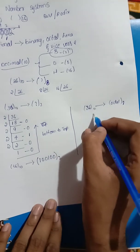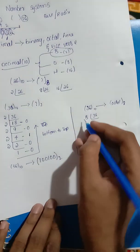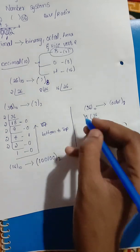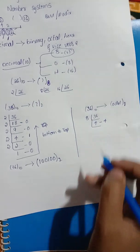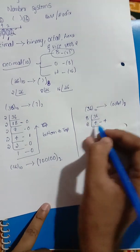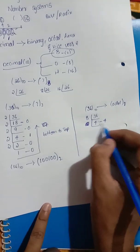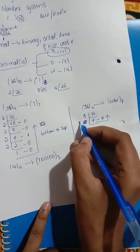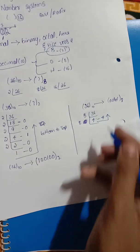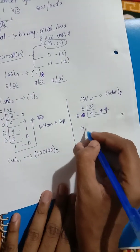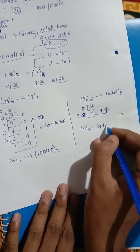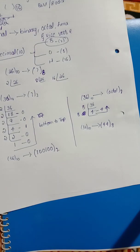Now for 36 base 10 converted to octal: 8 times 4 is 32, so there is a balance of 4. You divide 36 by 8. Reading from bottom to top, you get the octal equivalent. The process follows the same division method, recording remainders and reading them bottom to top.